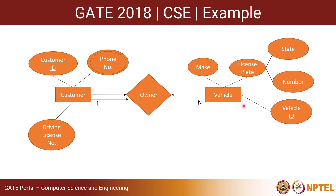Entities are represented using a rectangle, and each entity has some attributes. In this case, 'make' is an attribute. 'License plate' is a composite attribute comprising state and number. The entity also has a primary key — vehicle ID — which will be unique for each entity in the entity set. We have another entity called 'customer', with a primary key called ID, a multi-valued attribute called phone number represented using a double circle, meaning a customer can have more than one number, and also a driving license number.